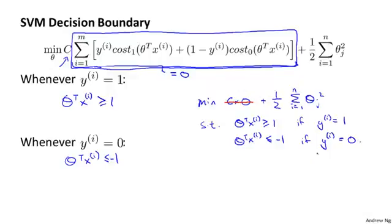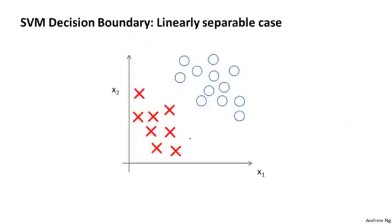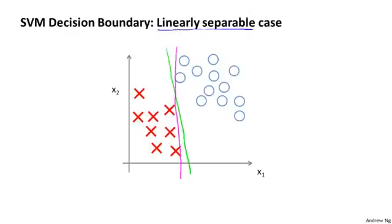It turns out that when you solve this optimization problem — when you minimize this as a function of the parameters theta — you get a very interesting decision boundary. If you look at a data set like this with positive and negative examples, this data is linearly separable, meaning there exist many different straight lines that can separate the positive and negative examples perfectly. For example, here's one decision boundary that separates the positive and negative examples, but that doesn't look like a very natural one. The support vector machine will instead choose this decision boundary, which I'm drawing in black, and that seems like a much better decision boundary. The black line seems like a more robust separator that does a better job separating the positive and negative examples.